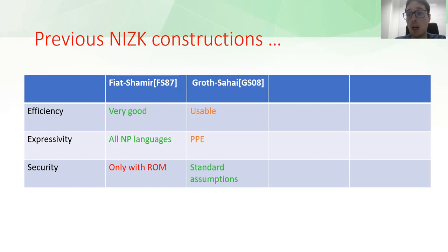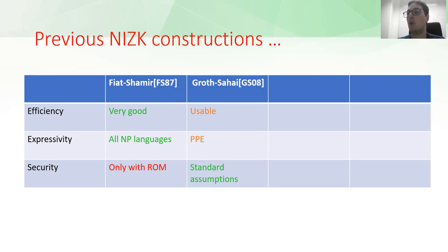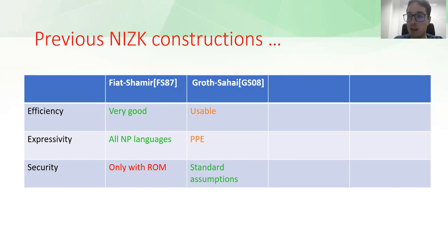It took quite a while before Groth and Sahai were able to define NIZKs from standard, well-established cryptographic assumptions. Those NIZKs were an outstanding result. However, they have some limitations which sometimes make them impossible to use in practice. First of all, they are often not efficient enough. And then they are defined only for pairing product equations, which means that in order to define a Groth-Sahai NIZK for a specific application, one must first find the representation of a given problem as a set of pairing product equations, which is sometimes a very hard task.